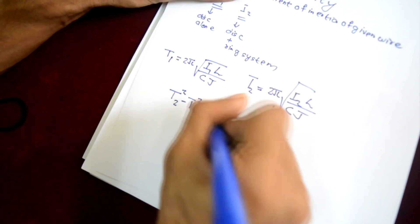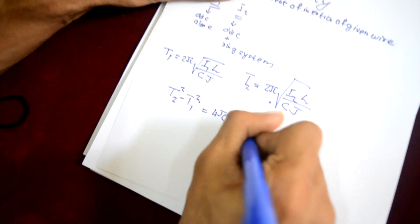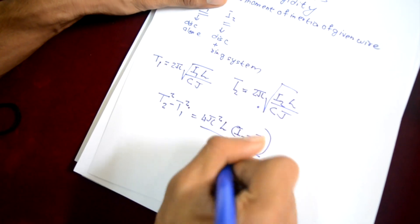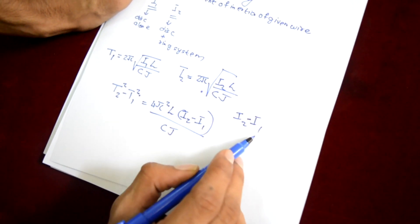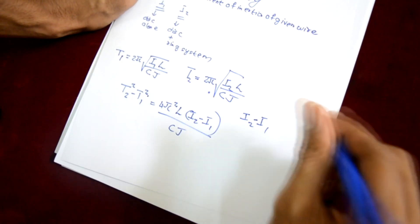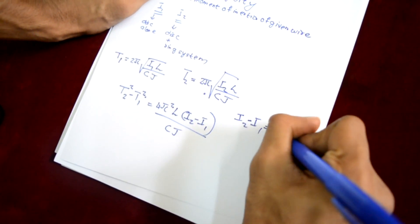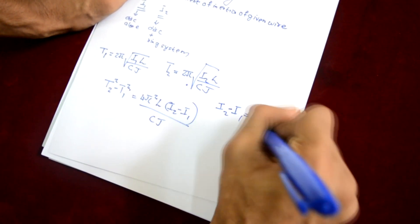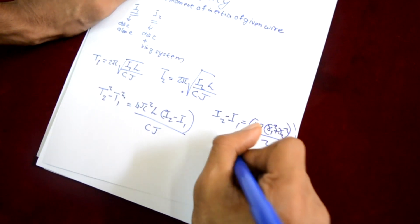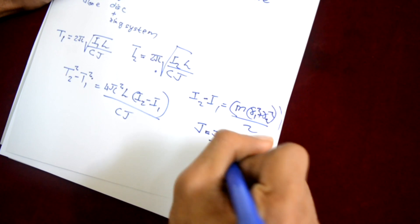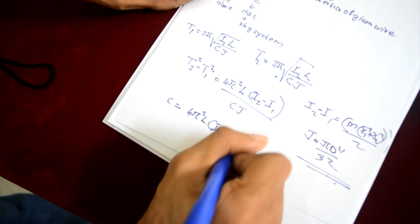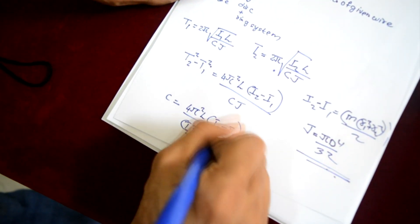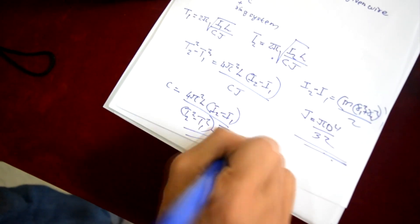We note the difference: T2² − T1² which equals 4π²·L·(I2 − I1) / CJ. Since I2 and I1 cannot be determined independently, we use I2 − I1, which is the mass moment of inertia of the ring about the vertical axis, equal to M(R1² + R2²) / 2. J, the polar moment of inertia, equals π·d⁴ / 32. Rearranging, C = 4π²·L·(I2 − I1) / [(T2² − T1²)·J]. Thus we get the value of C.